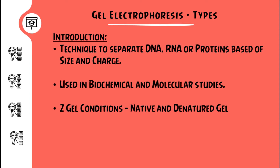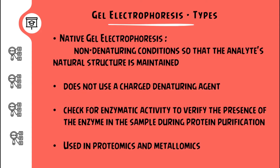With respect to the gel conditions, two conditions are seen: native gel and denatured gel. In native gel electrophoresis, there is a non-denaturing condition so that the analyte's natural structure is maintained. We do not use a charged denaturing agent. It is mainly used to check for enzymatic activity, to verify the presence of the enzyme in the sample during protein purification, and it is commonly used in proteomics and metallomics.